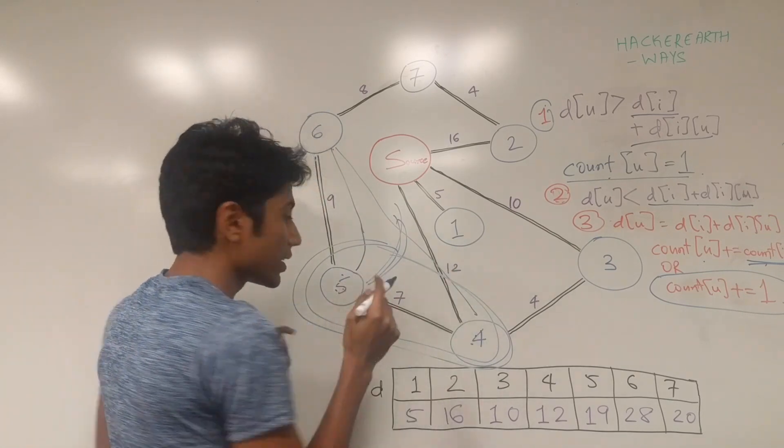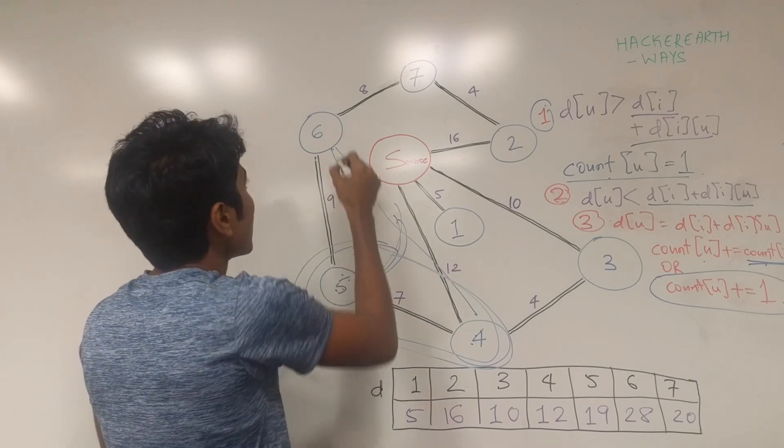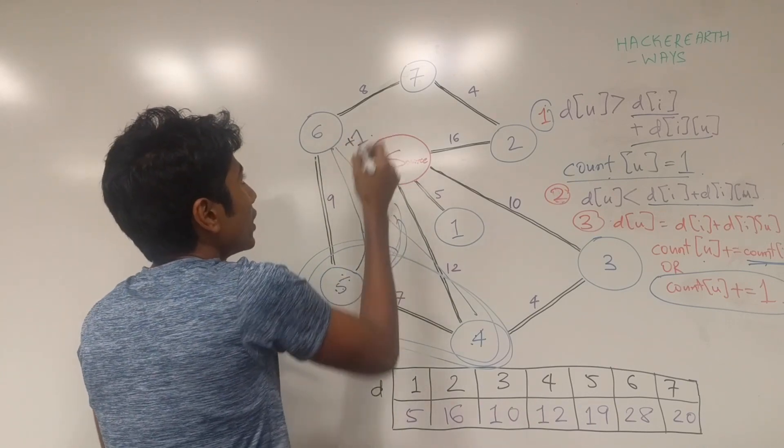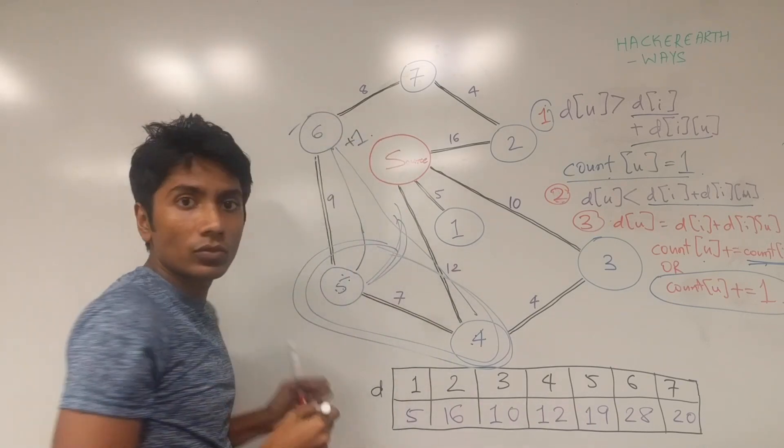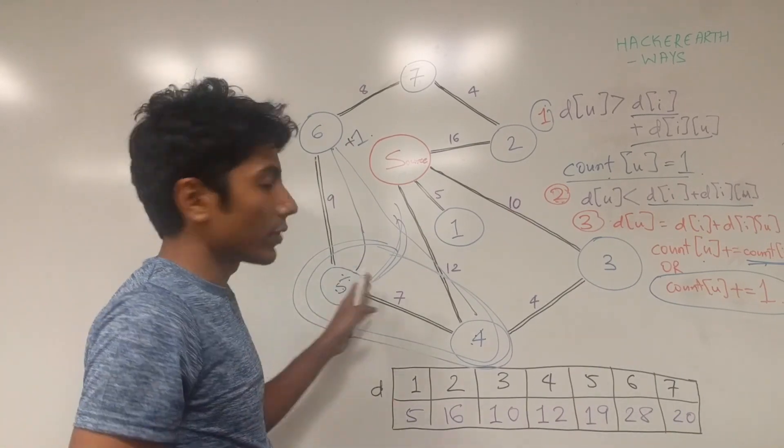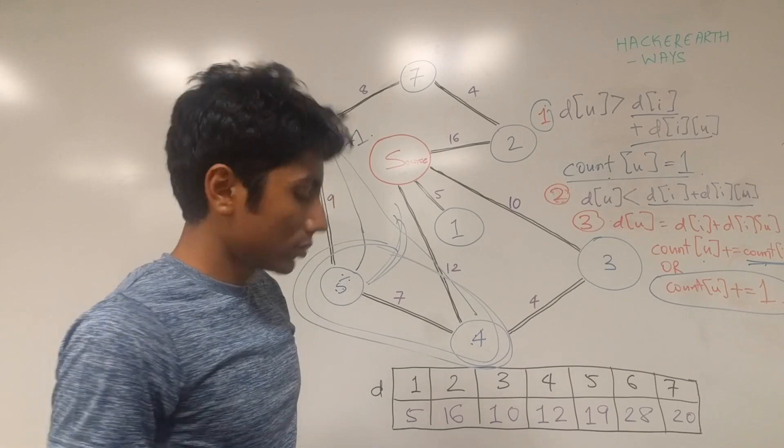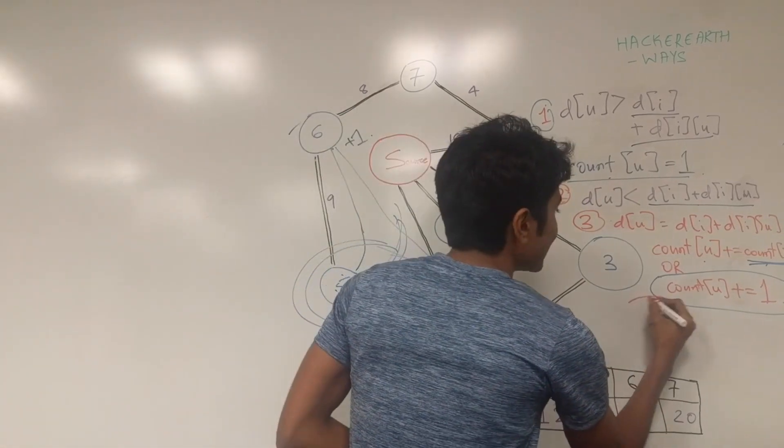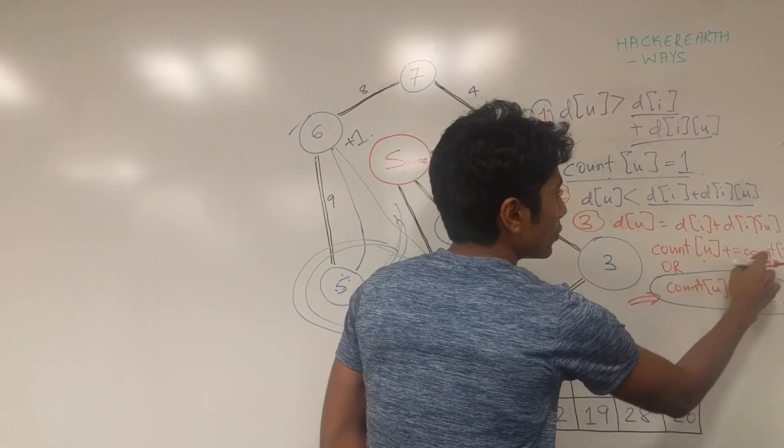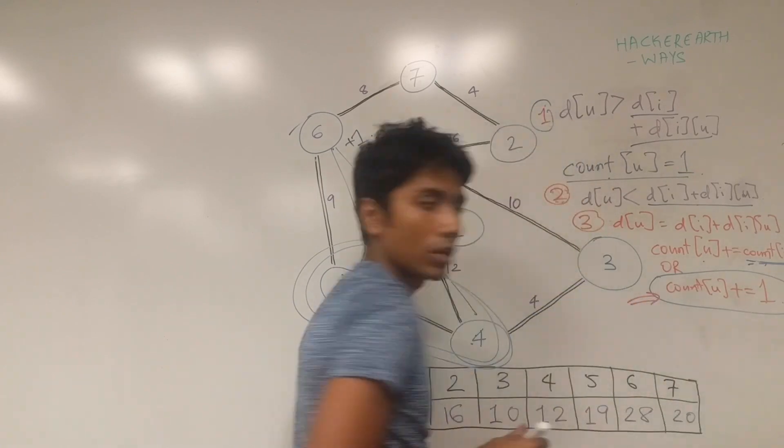All that matters is the number of ways you can get to 6 using different cities from your visited set. So once you're using 5 as an intermediate city, what's going to happen is just 1 has to be added to the count of 6. If that is the shortest possible distance that we have found till this point. So we have this condition being used instead of using count of 5.